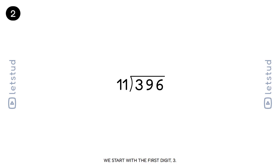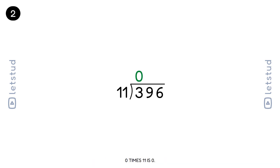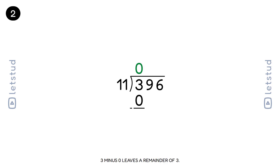We start with the first digit, 3. How many times does 11 fit into 3? It fits 0 times. 0 times 11 is 0. 3 minus 0 leaves a remainder of 3.